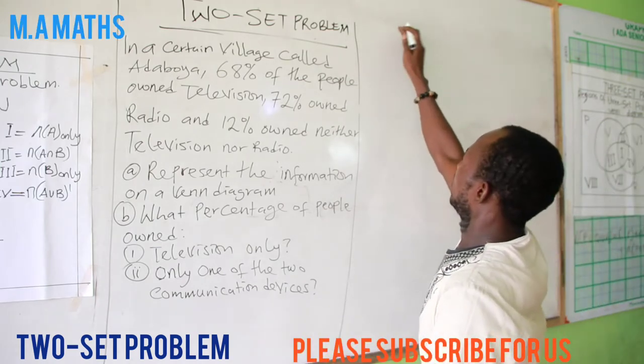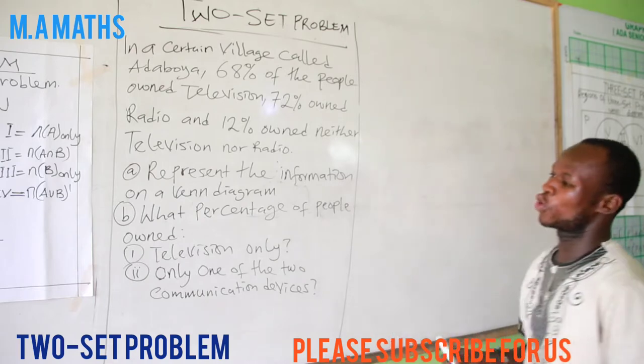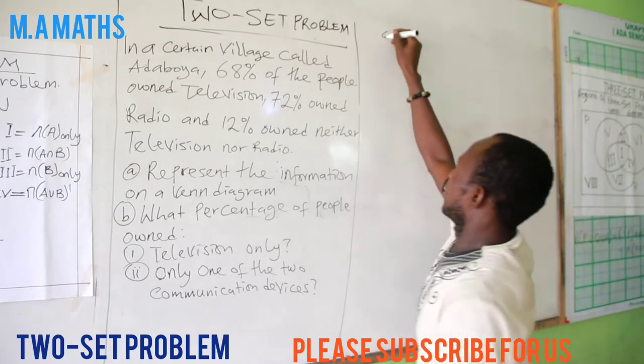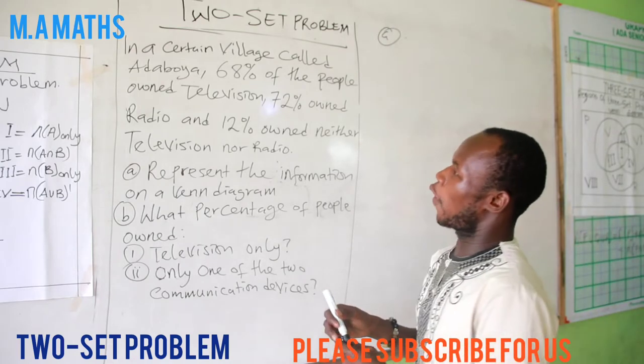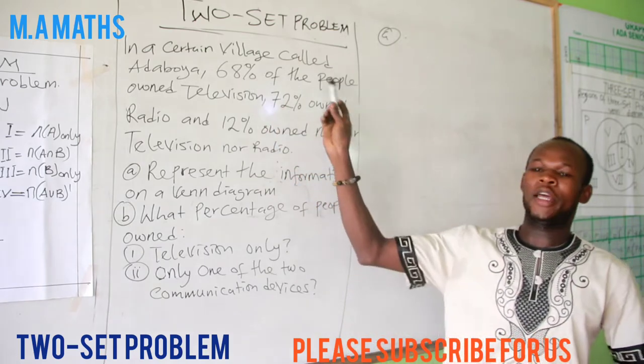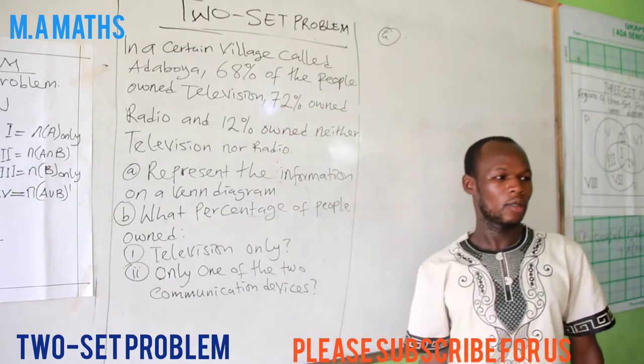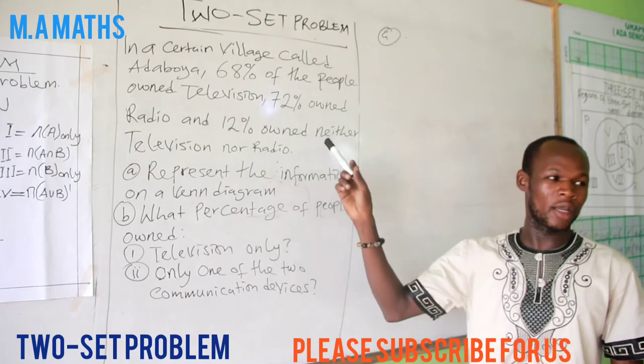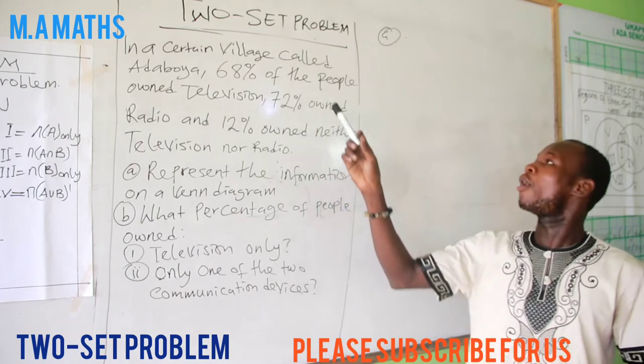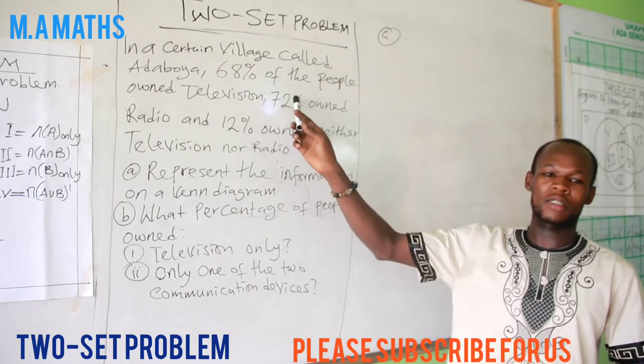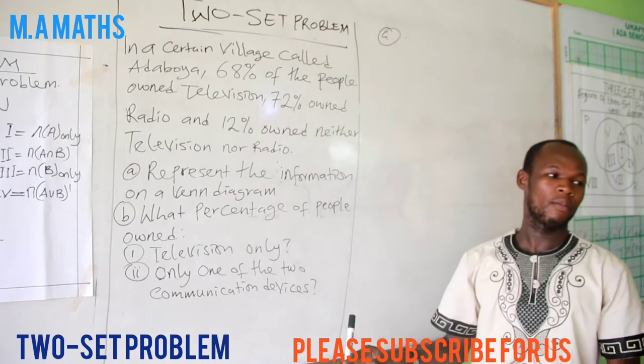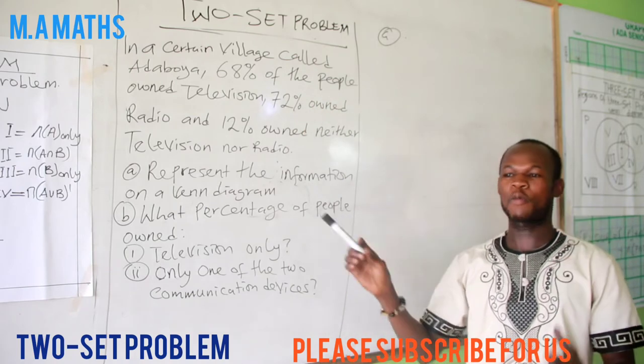We have the first one. What you need to do is that we have part A. This information that I've been giving to you, there are a lot of English in it. So I want us to try our best and put it in a mathematical form that can help you represent your data in a Venn diagram.